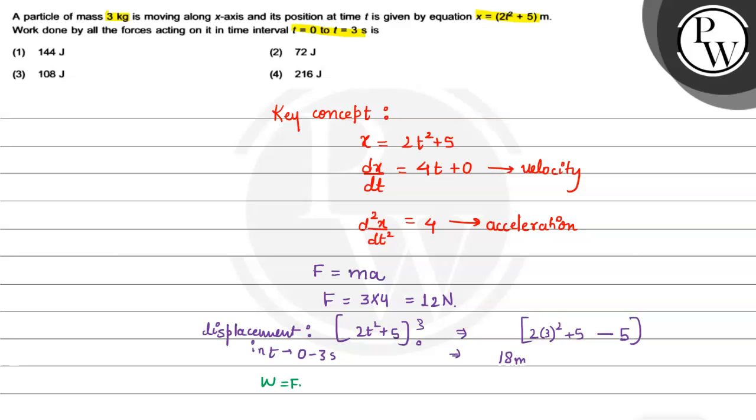Our force into displacement. Force is 12N, displacement is 18 meter, so it will be 216J.